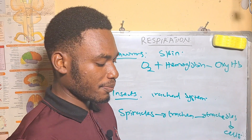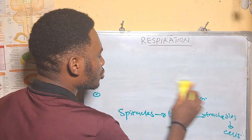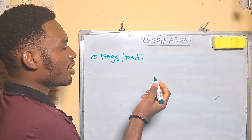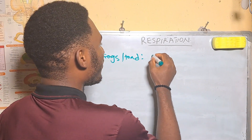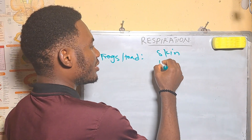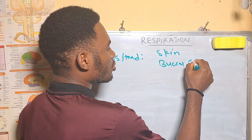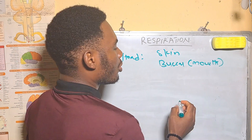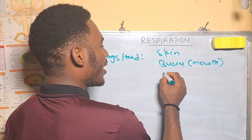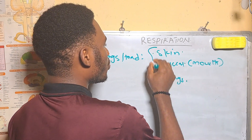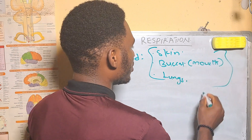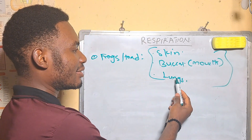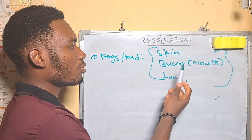Toads and frogs respire in three ways: through the skin, through the mouth — also called buccal respiration — and through the lungs. This is why they can survive both on land and in water.